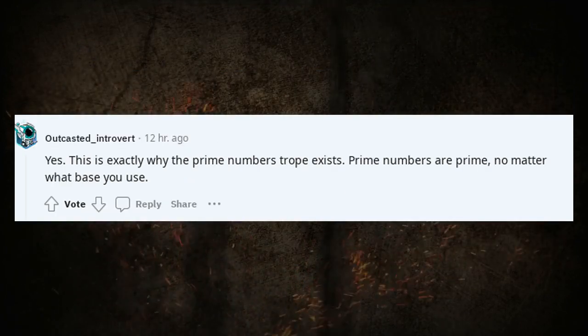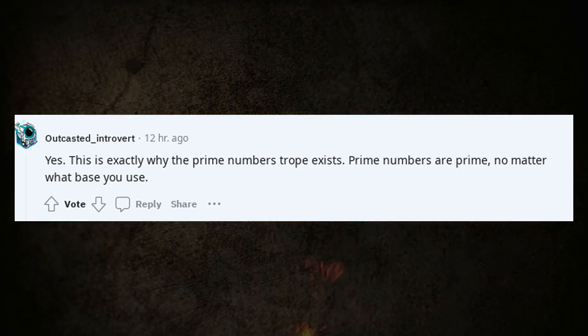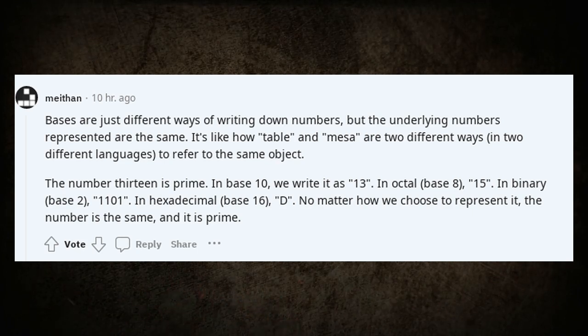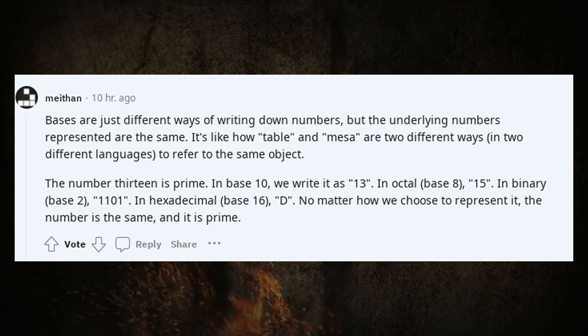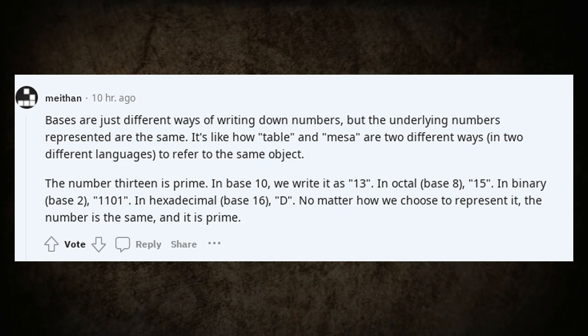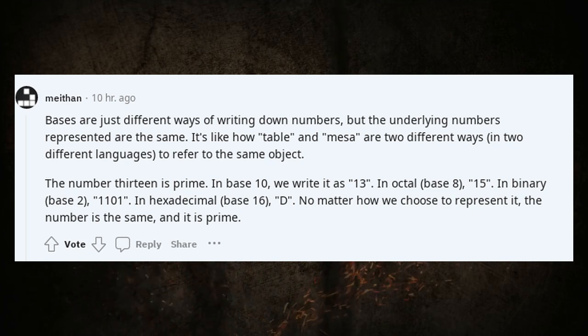Yes. This is exactly why the prime numbers trope exists. Prime numbers are prime no matter what base you use. Bases are just different ways of writing down numbers, but the underlying numbers represented are the same. It's like how table and mesa are two different ways in two different languages to refer to the same object. The number 13 is prime. In base 10, we write it as 13. In octal base 8, 15. In binary base 2, 1101. In hexadecimal base 16, D. No matter how we choose to represent it, the number is the same and it is prime.